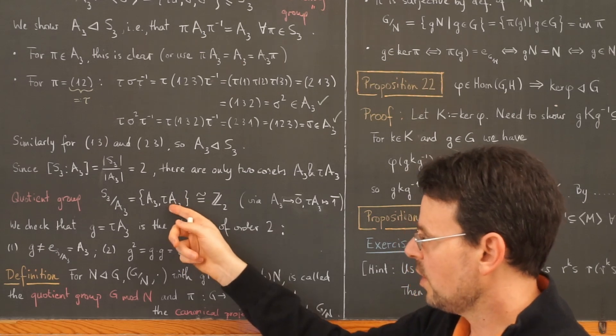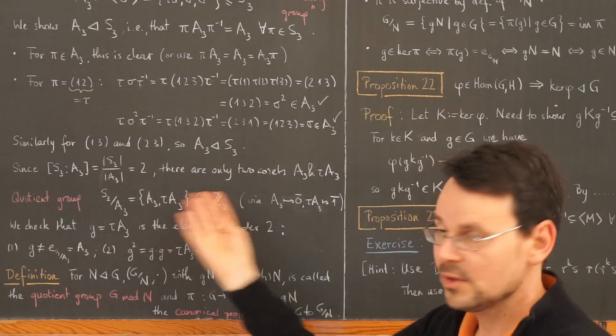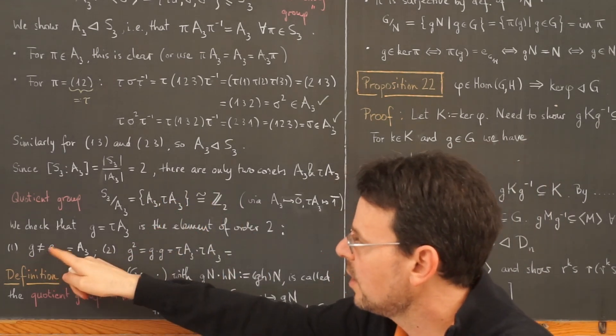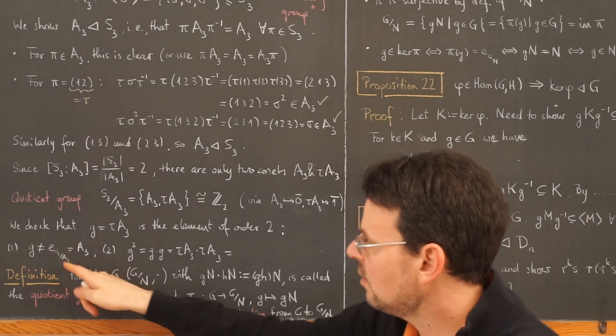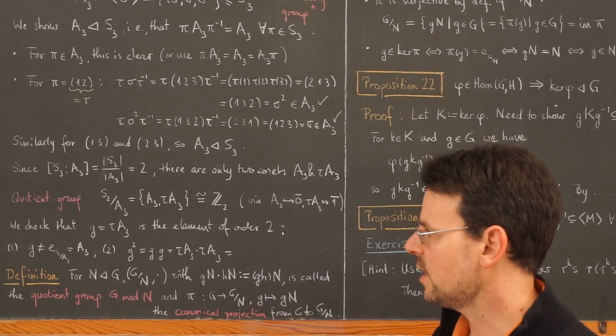Clearly it is not of order 1 because it is not the same as this here. Those are different cosets, so we have G is not equal to the identity of this quotient group, which would be again this left coset A3 itself.